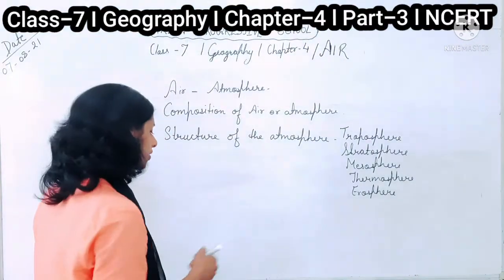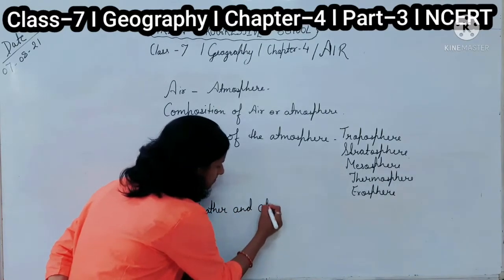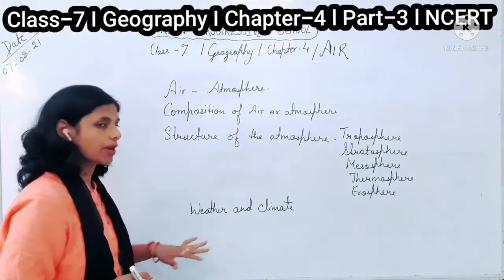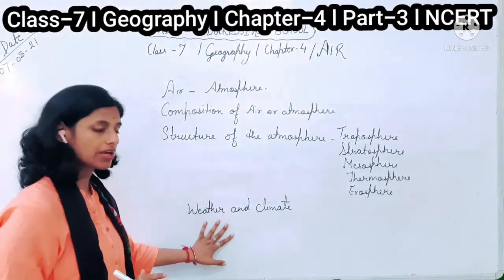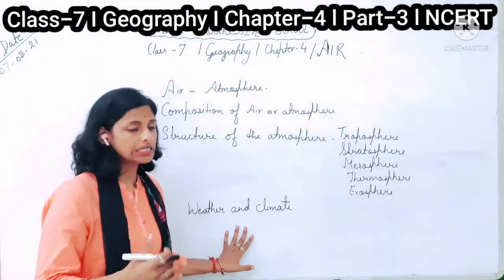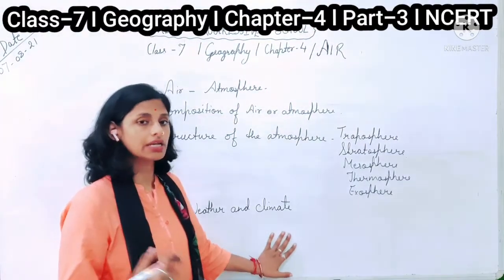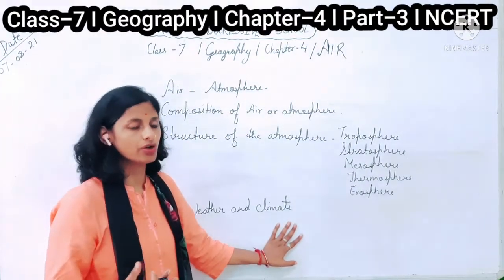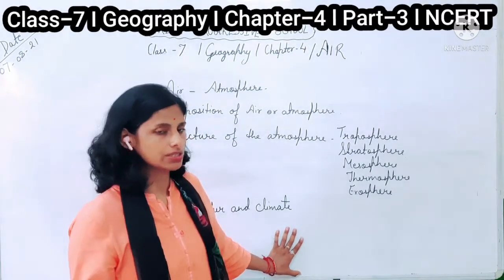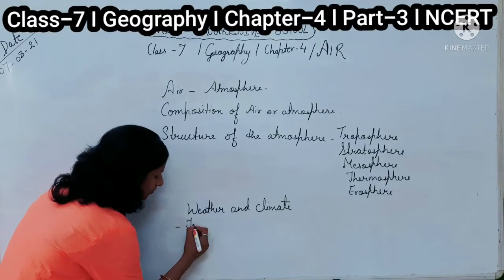We have also discussed about the weather and the climate. Weather refers to the day-to-day condition of our atmosphere — it can change any time. On the other hand, climate is the condition of the atmosphere over a long period of time, about 30 to 40 years.